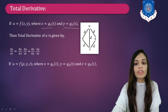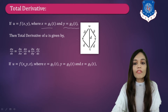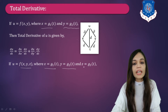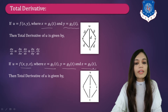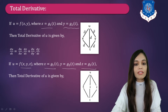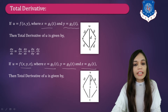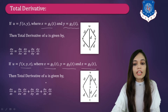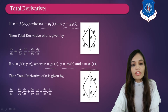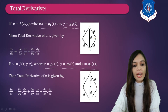Now let us see the formula of total derivative for three variables. If U is a function of three variables X, Y and Z, where X, Y and Z are each functions of T, the tree diagram shows U branching to X, Y, Z, all functions of T. The formula of dU/dT will be ∂U/∂X into dX/dT plus ∂U/∂Y into dY/dT plus ∂U/∂Z into dZ/dT.